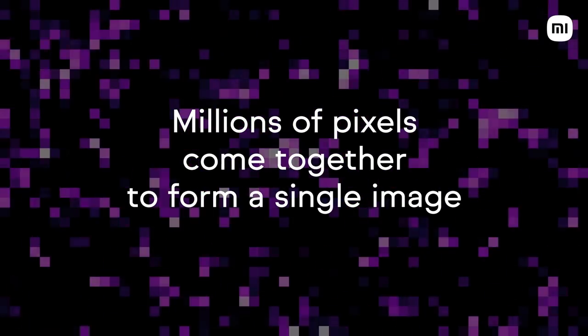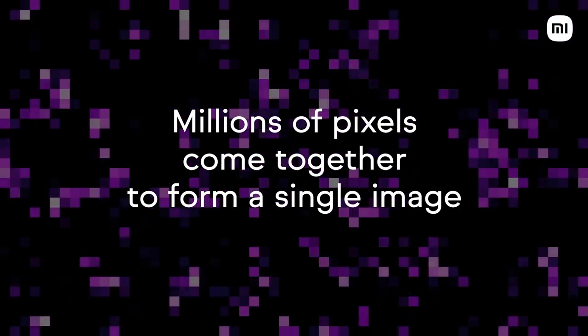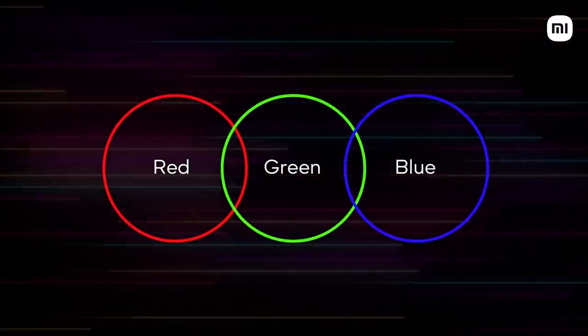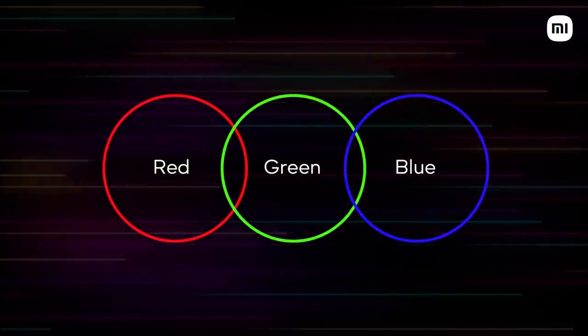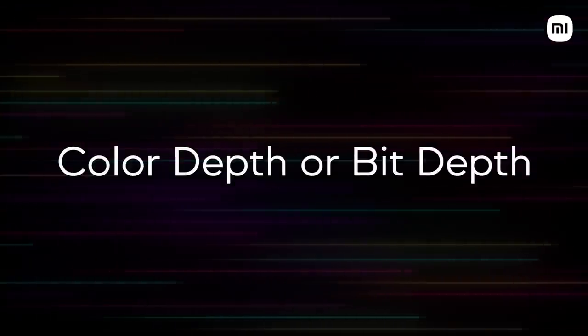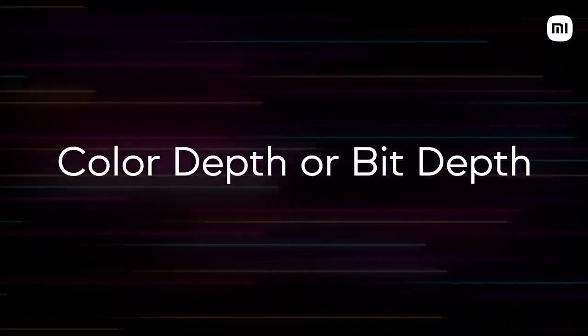As you already know, any graphic which you see on your screen is made up of millions of pixels coming together to form a single image. Now, if you go closer to a certain pixel, you will see that a pixel further carries shades of red, green and blue — which we usually call RGB — to form an image on your screen. This information which is stored per red, green and blue channel is called color depth or bit depth.